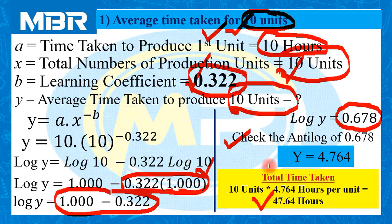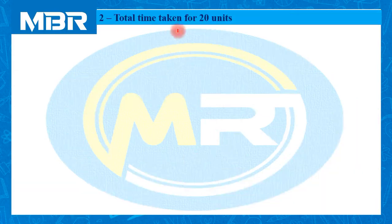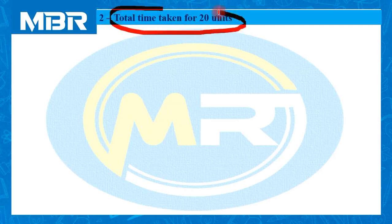Always concentrate on the information given in the question in order to determine the correct answer. After the first question, let us move to the second item. As part of the second item, we need to calculate total time taken for 20 units — that is, when we are manufacturing 20 units, how much time is required to produce them?